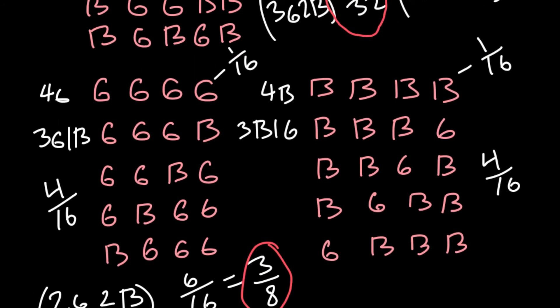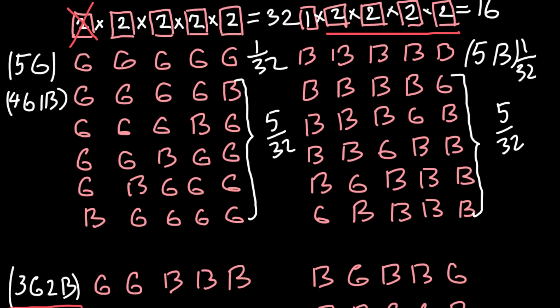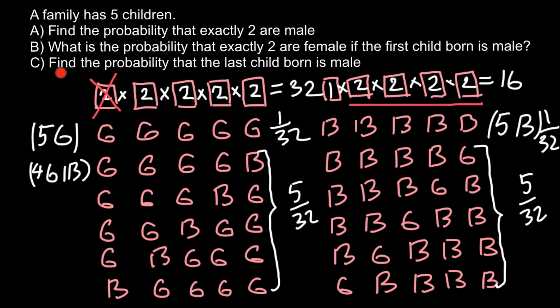The last question: find the probability that the last child born is male. Since we already know the sex of the first four children, the only remaining question is whether the fifth child is a boy or a girl — just two variants. Therefore, the probability that the last child is male is 1/2.